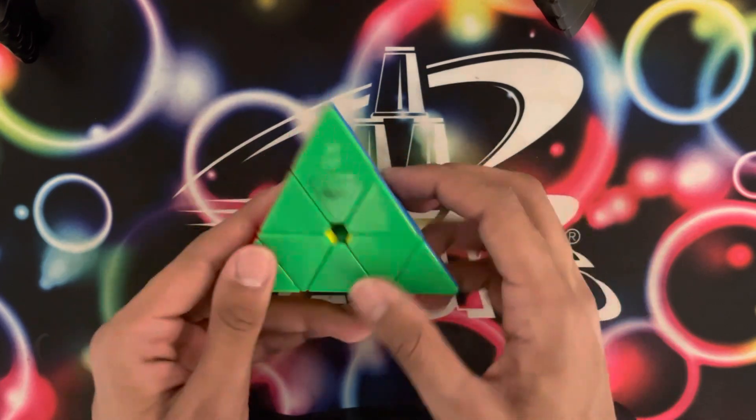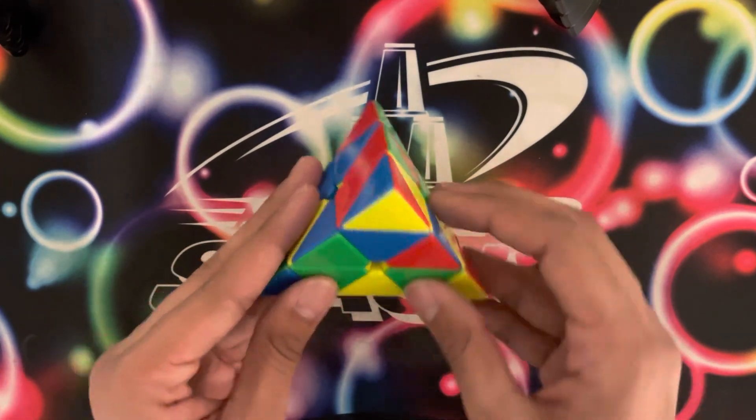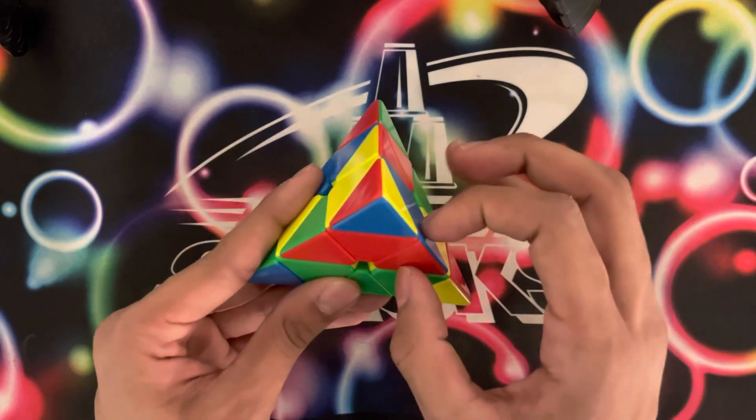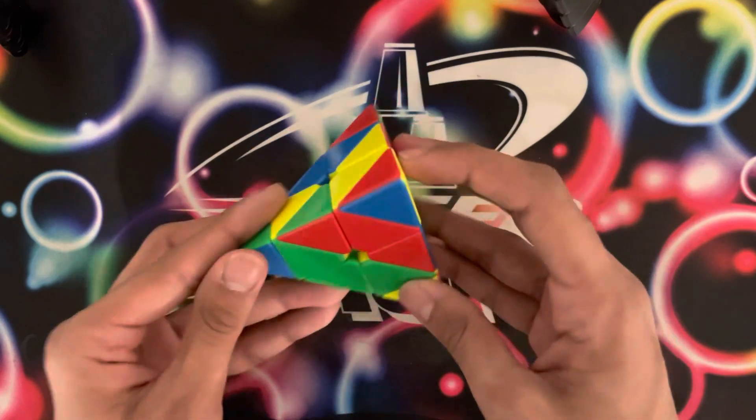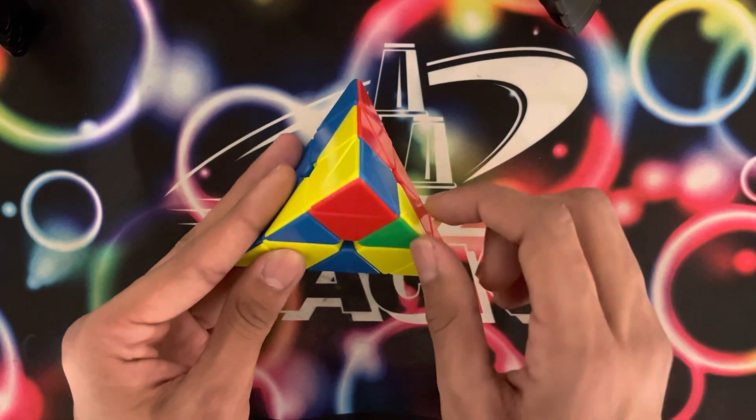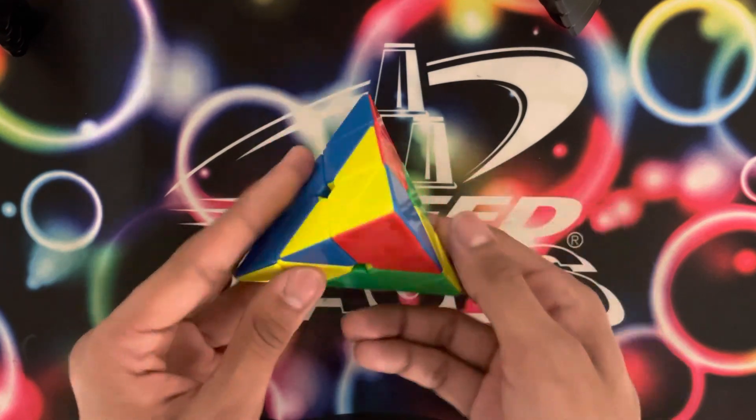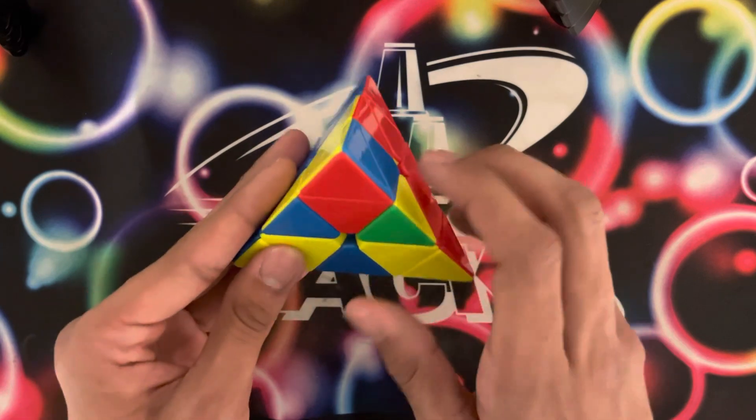On the fourth scramble, I saw that if I do an R U prime R prime, I can solve this edge while setting up the green V, but with an L. And then you get this case which you can cancel into. However, during the execution, I messed it up and I accidentally did the R prime.